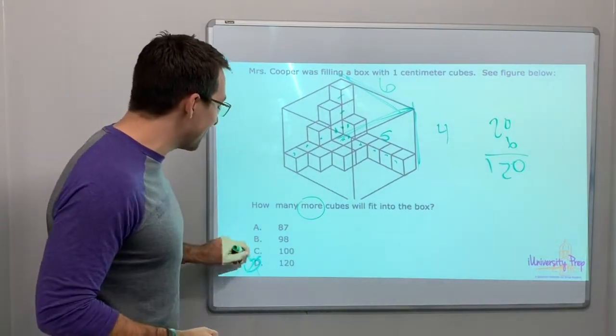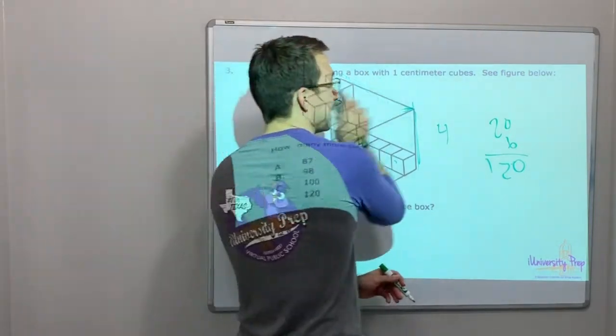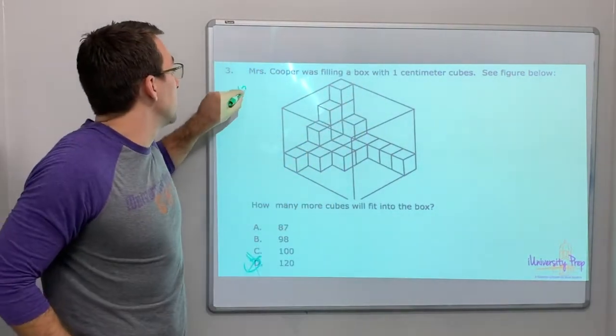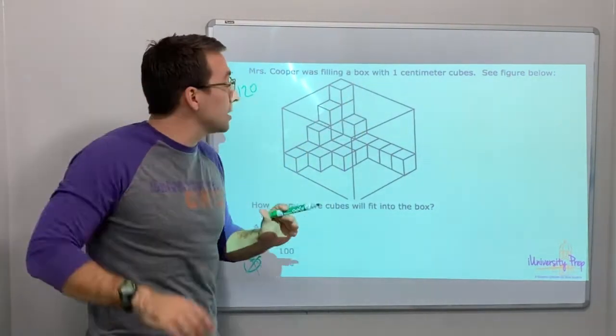Wrong! That's the wrong answer. Because it says how many more cubes will fit in there? So we know that we have one hundred twenty cubes total, and now let's subtract.